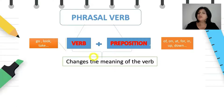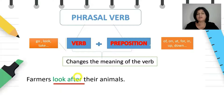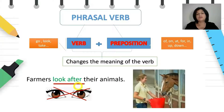For example: farmers look after their animals. Here, 'look after' is a phrasal verb. We have the verb 'look' and the preposition 'after'. In this phrasal verb, 'look' doesn't mean to see — 'look after' has a completely different meaning. It means 'take care of'.